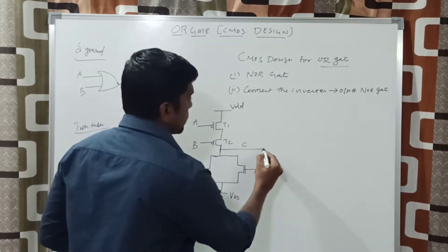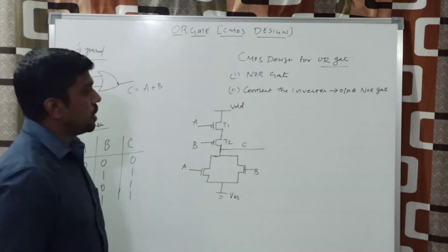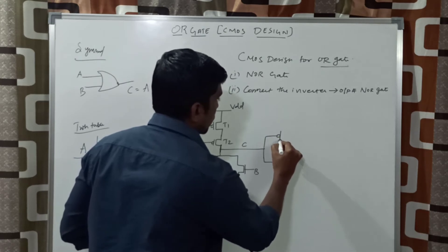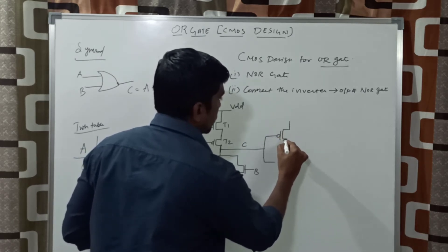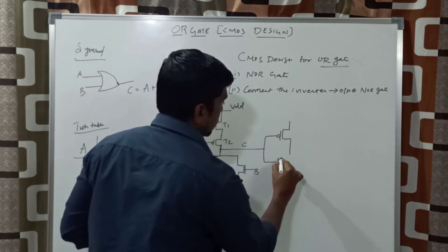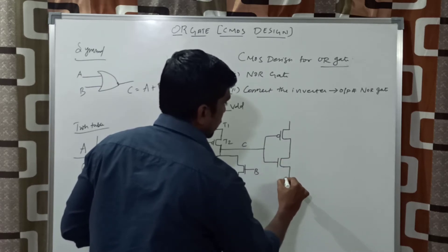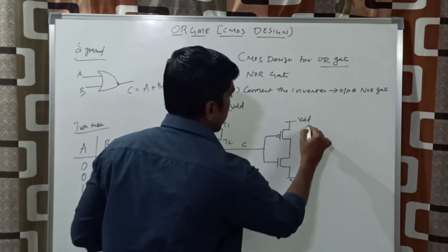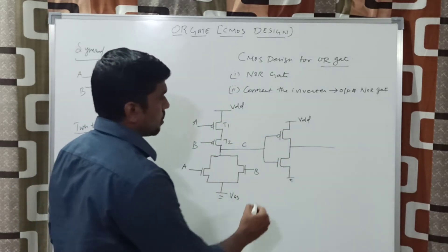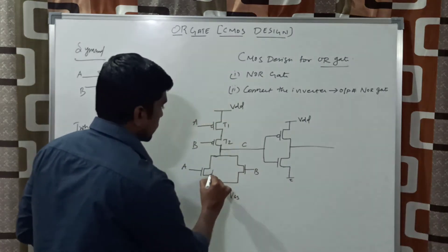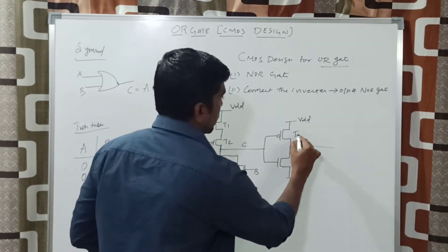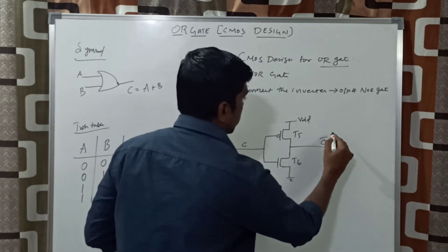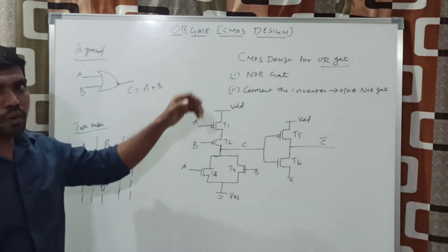The second step is that the output of the NOR gate is connected to an inverter. One inverter circuit is used — a PMOS connected to VDD and an NMOS connected to VSS. You get the result between the pull-up and pull-down networks. The NOR gate transistors are named T3 and T4, and the inverter transistors are named T5 and T6. The final result is C-prime.